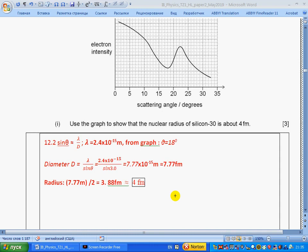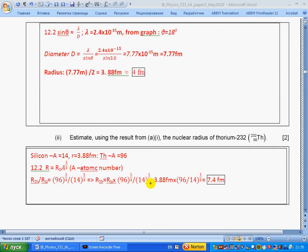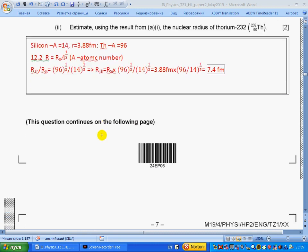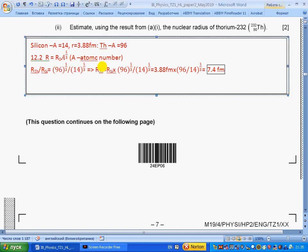Part ii: Estimate, using the result from part a, the nuclear radius of thorium. Silicon atomic number is 14, thorium atomic number is 96. The formula for relating radius and atomic number is given. Let's find the ratio of radii and then rewrite this for radius of thorium. We have 96 over 14, take the cubic root, and we get 7.4 femtometers.